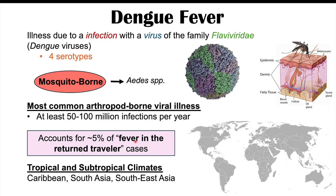We're going to find this particular infection in particular parts of the world, because of where this particular species of mosquito resides. We can see it in the Caribbean, in South Asia — so the Indian subcontinent — and we can also see it in Southeast Asia especially. So these are some of the important places in the world where we can often get a lot of these infections.